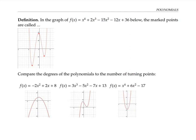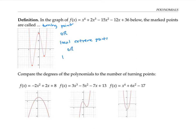In the graph of the polynomial shown here, the three marked points are called turning points, because the polynomial turns around and changes direction at those three points. Those same points can also be called local extreme points, or local maximum and minimum points. For this polynomial, the degree is four and the number of turning points is three.